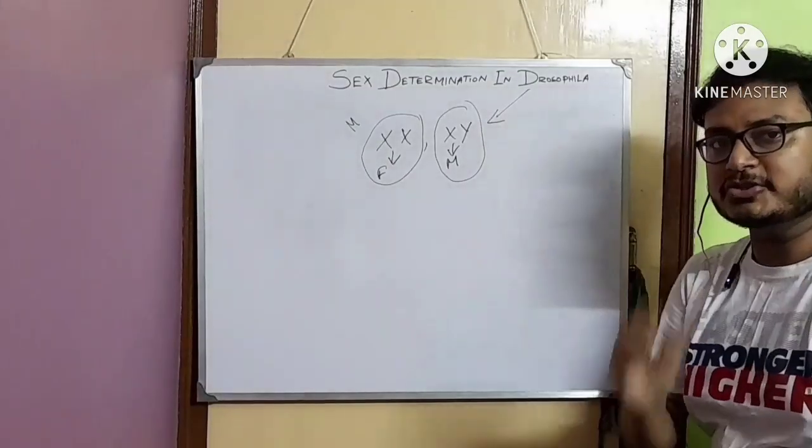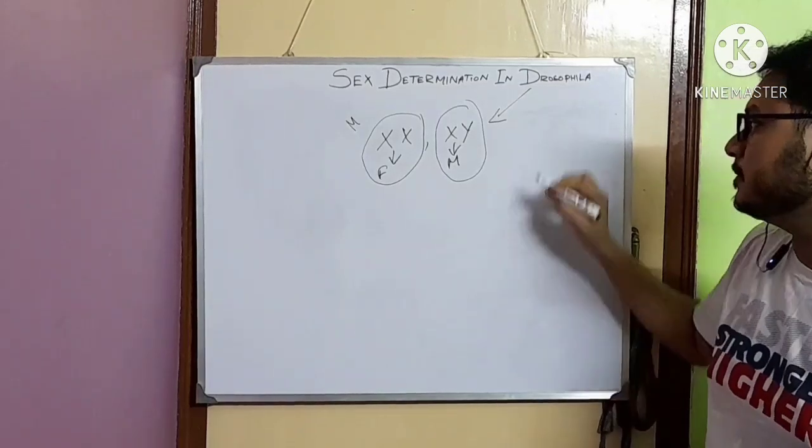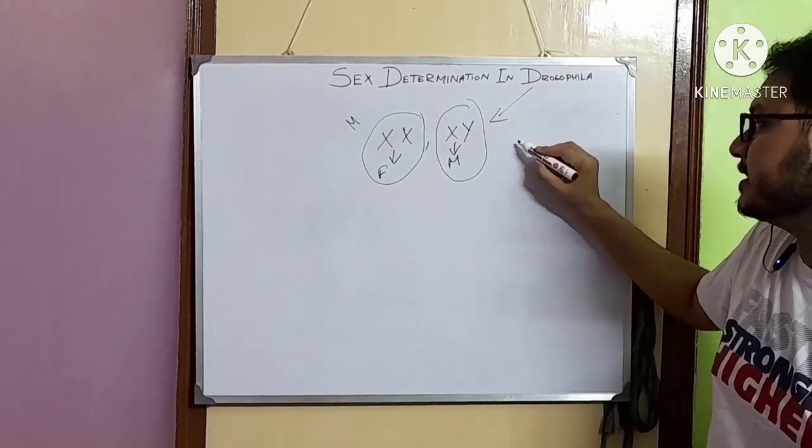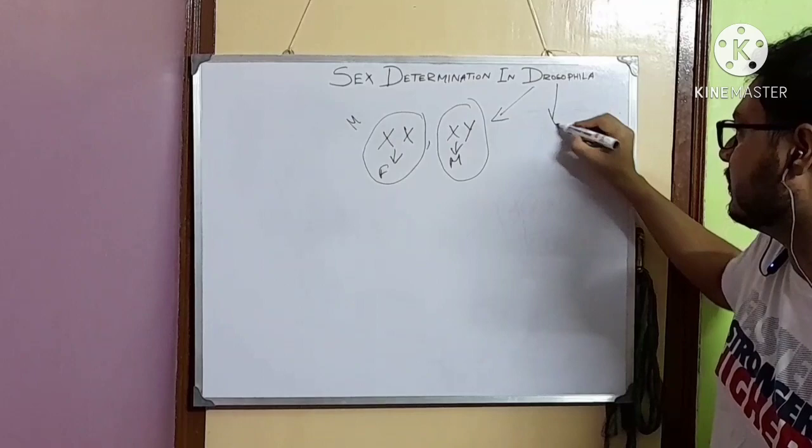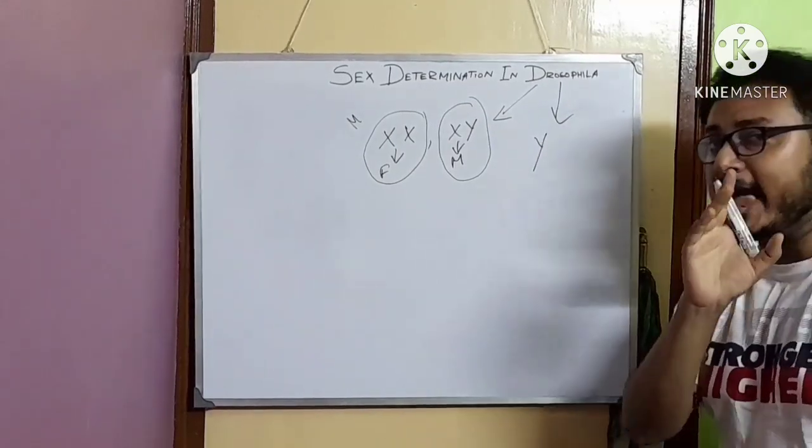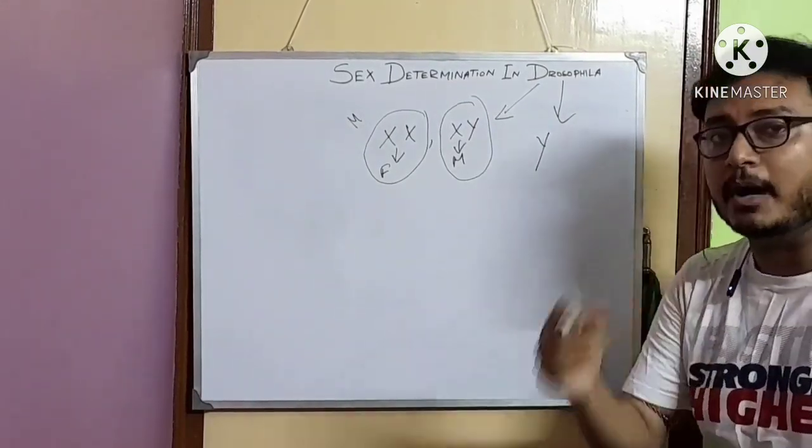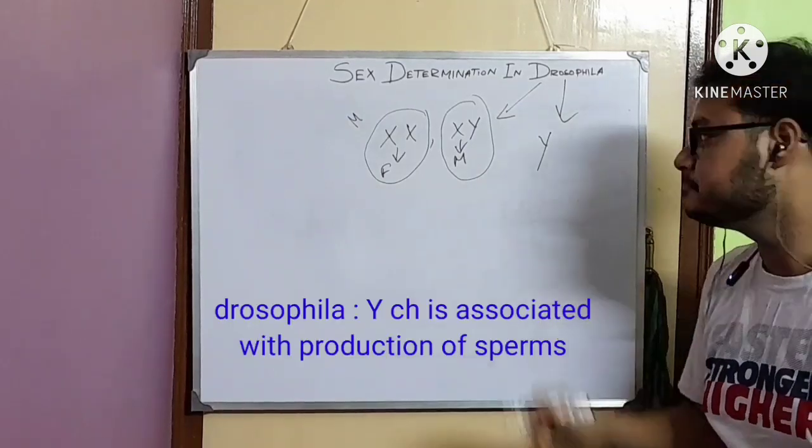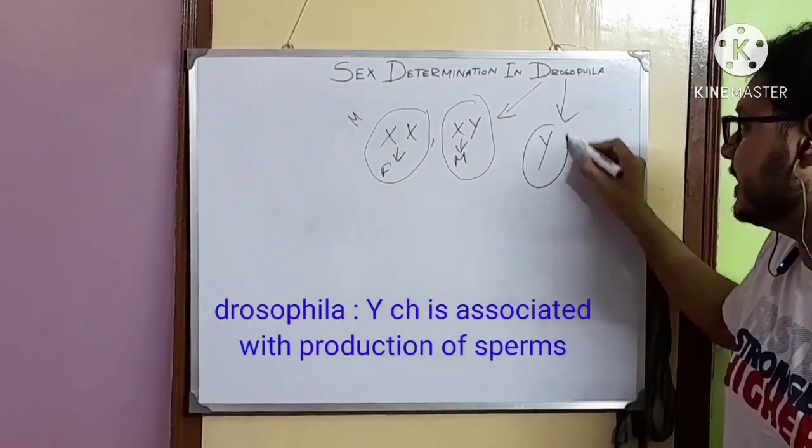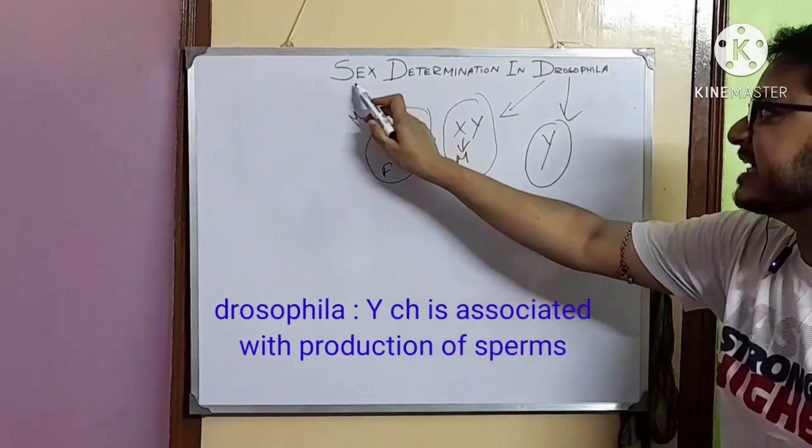In Drosophila, the Y chromosome is only associated with the production of sperm in adults. It does not play any role in sex determination.